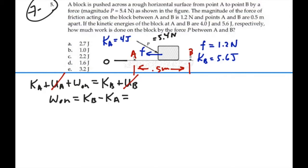They are 5.6 joules at B and 4 joules at A. So, our change in kinetic energy is going to be 1.6 joules. That will be the total work done between A and B.